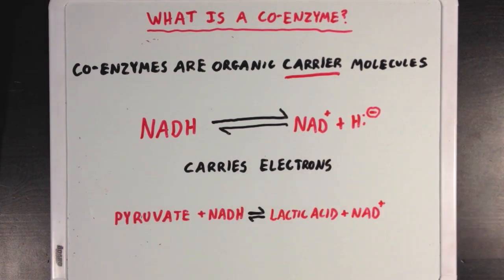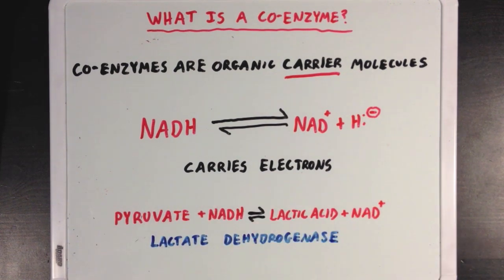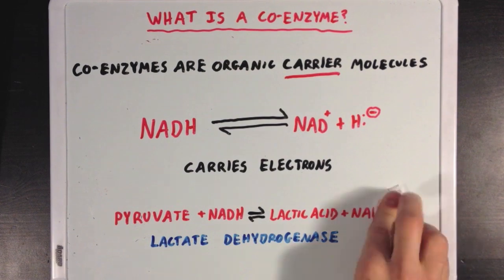Now if you remember the lactic acid fermentation reaction, where pyruvate is converted to lactic acid, you'd see that the enzyme catalyzing this reaction, lactate dehydrogenase, uses NADH as a coenzyme in order to transfer electrons to the pyruvate molecule in order to turn it into lactic acid. And in this sense, NADH is acting as an electron-carrying coenzyme.